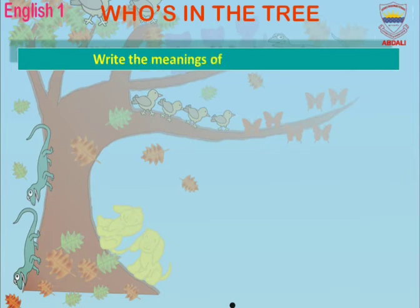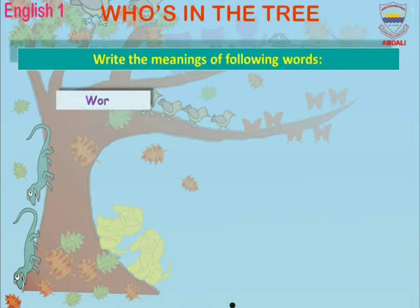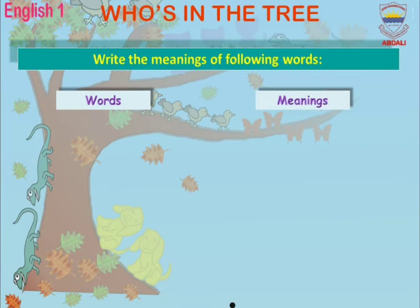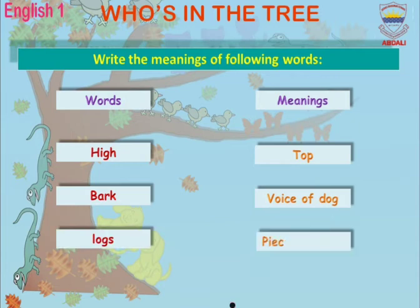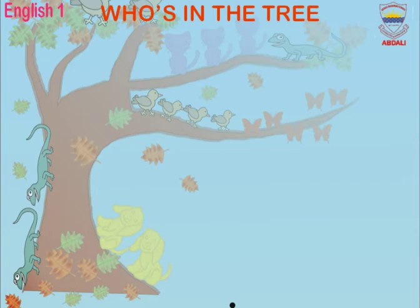Write the meanings of the following words. Words and meanings: High — buland (tall). Bat — bhoonkna (bark, voice of dog). Loak (lakdi) — piece of wood.